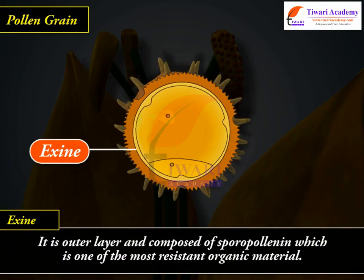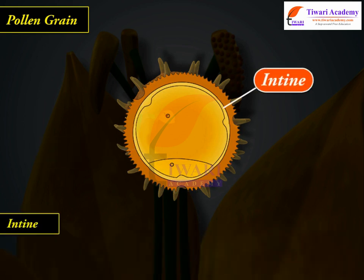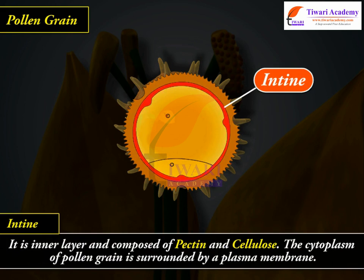Exine is the outer layer and is composed of sporopollenin, which is one of the most resistant organic materials. It can withstand high temperatures and strong acids and alkali. At one or more places the exine is very thin or absent; these regions are called germ pores. Intine is the inner layer and is composed of pectin and cellulose.